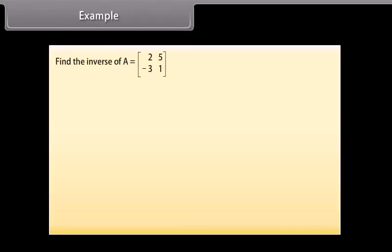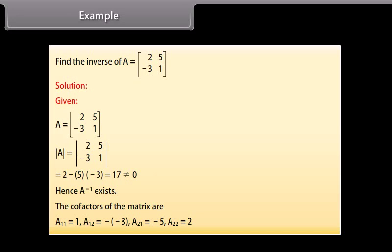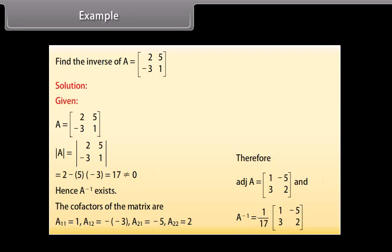Example: find the inverse of A with first row 2, 5 and second row minus 3, 1. Solution: determinant of A equals 2 times 1 minus 5 times minus 3 equals 17, which is not equal to 0, so the inverse exists. The cofactors are A11=1, A12=3, A21=minus 5, A22=2. Therefore, adj(A) has first row 1, minus 5 and second row 3, 2. Inverse of A equals 1 divided by 17 times the matrix with first row 1, minus 5 and second row 3, 2.